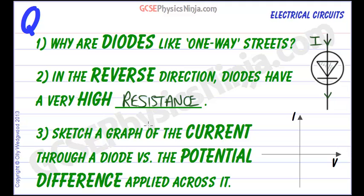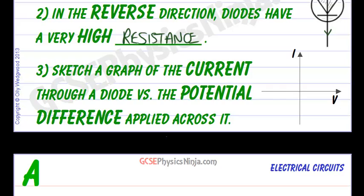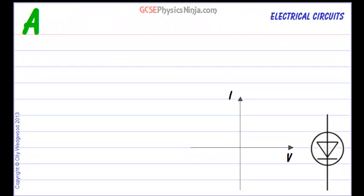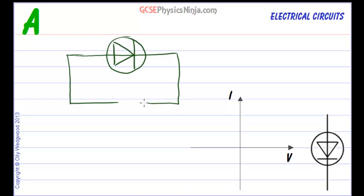Sketch a graph of the current through a diode versus the potential difference applied across it. So if we have a diode here and let's say we can connect this to different voltages and we may have a battery like so.